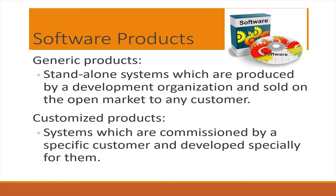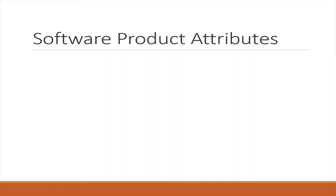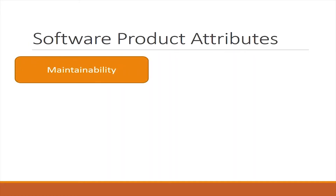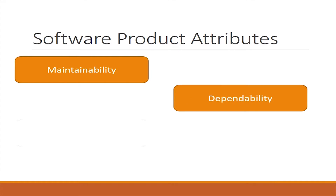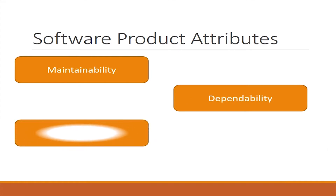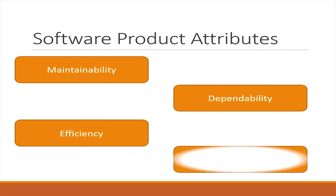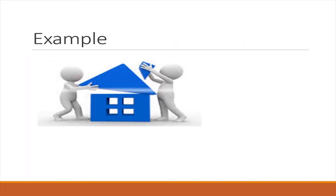Let's now look at some attributes to measure the effectiveness of software production. These include: maintainability, dependability, efficiency, and usability.